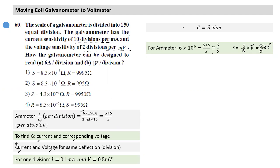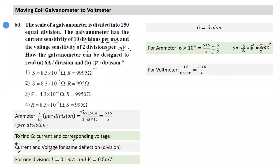For the voltmeter design, the ratio V'/V equals the ratio of resistances. V' per division = 1 volt, V per division (before adding R) = 0.5 millivolts. So (G + R)/G = 1 volt / 0.5 millivolts = 2000. Since G = 5 ohms, we can easily calculate R.